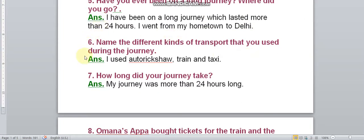Question 6: Name the different kinds of transport that you used during the journey. Answer is I used auto rickshaw, train and taxi. You can write whatever you used during that journey.